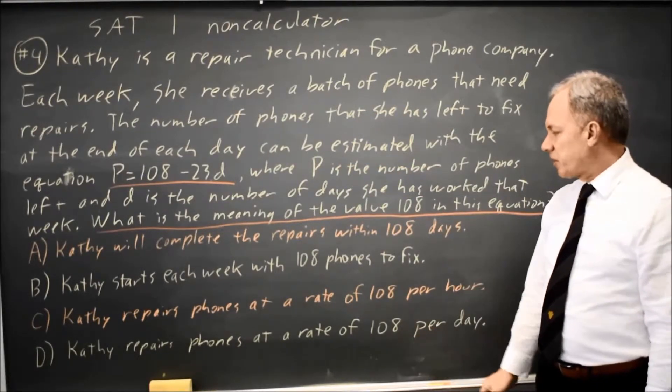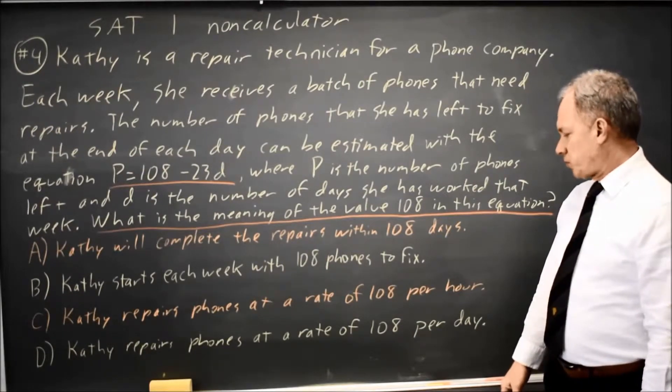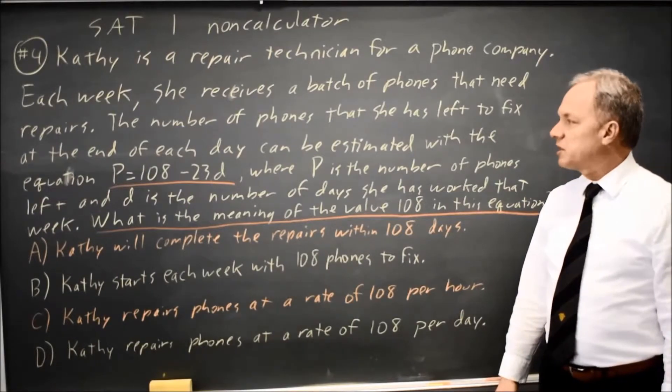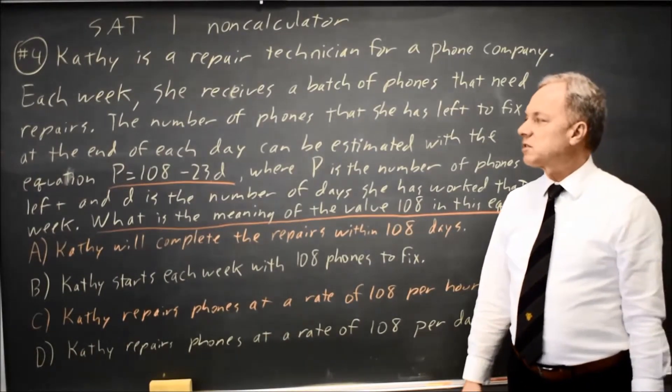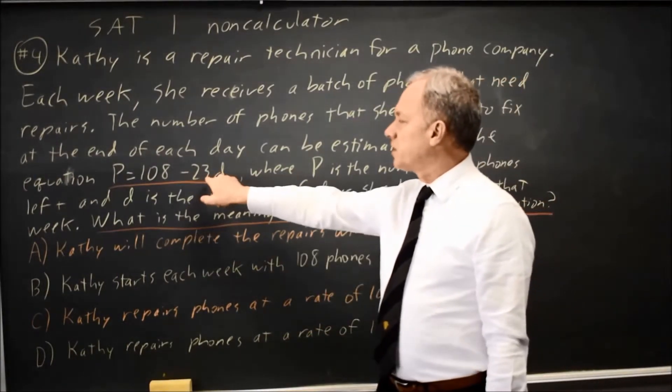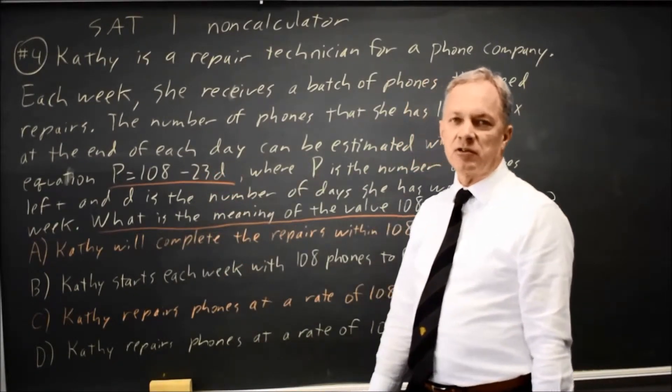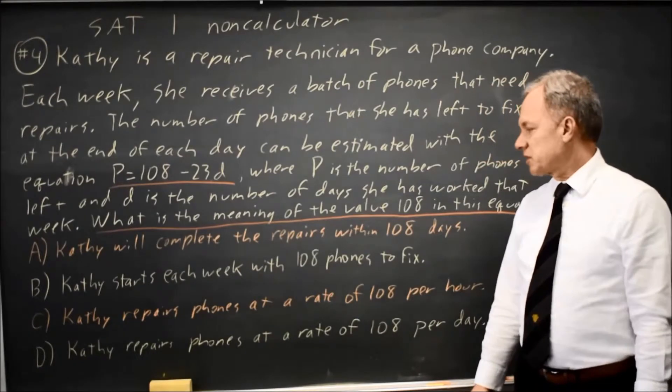D, Kathy repairs phones at a rate of 108 per day. If she's repairing phones at a rate of 108 per day and she starts whatever number she has at day 1, you would expect 108 fewer at day 2, and that would be negative, so choice D does not make sense either.